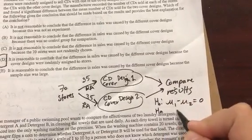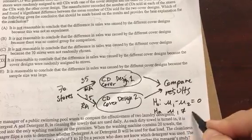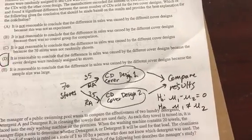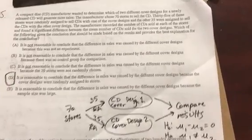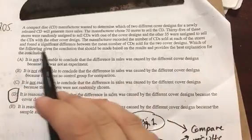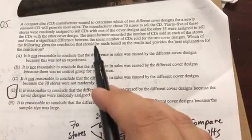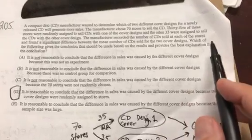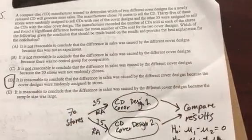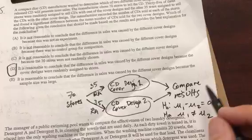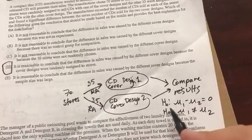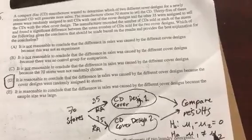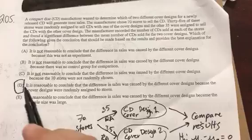One of them ended up being different than the other, whether one was bigger than two or two is bigger than one. Which of the following gives the conclusion that should be made based on the results provided? Well, we know that if we design it properly and we do see a difference, then that's proof that there is a difference.